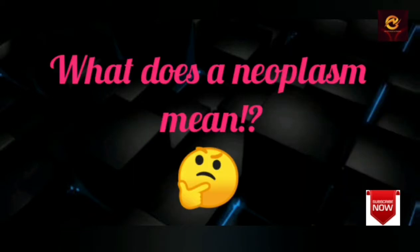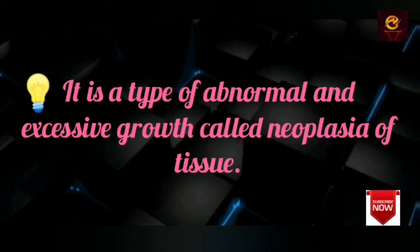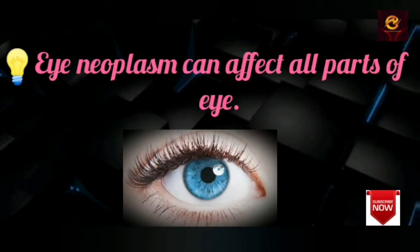But what does a neoplasm mean? A neoplasm is a type of abnormal and excessive growth, called neoplasia, of tissue. Eye neoplasm can affect all parts of the eye.